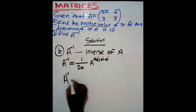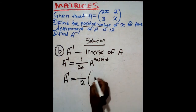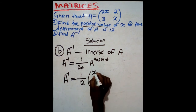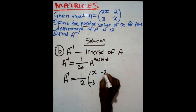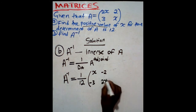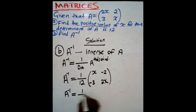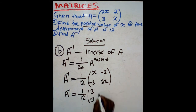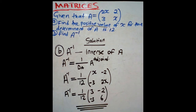The inverse of A is going to be equal to 1 over the determinant, which is 12, times the adjoint matrix. You start by exchanging the positions: write X in the top-left position. Then negative 3 in the top-right, negative 2 in the bottom-left, because the signs must change. This becomes 2X in the bottom-right. Since we know X is equal to positive 3, this becomes 1 over 12, times the matrix with entries 3, negative 3, negative 2, and 2 times 3 equals positive 6. This is the inverse of matrix A.